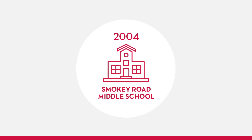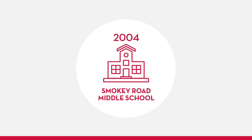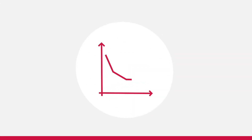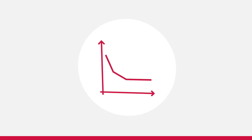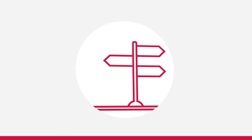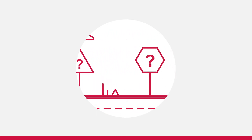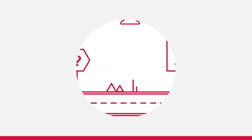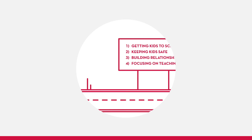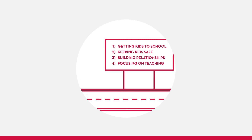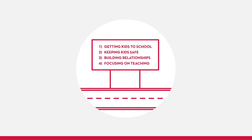Back in 2004, Smokey Road Middle School, a Title I school in Georgia, was faced with significantly low student performance. The school's principal, Lori Barron, knew that she needed to make some major changes but wasn't sure where to start. She recognized that she needed to focus the school on a few areas of improvement to make progress.